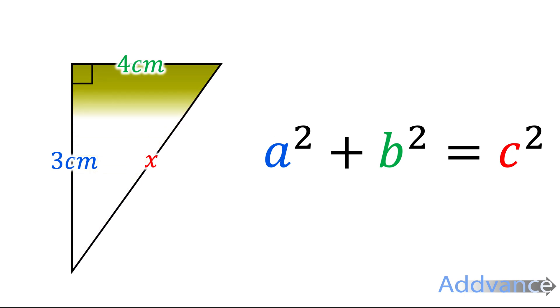So let's see an example. Here we have a triangle. It's a right-angled triangle, and it's got one side three centimetres, another side is four centimetres, and we want to find the missing side here, which is X.